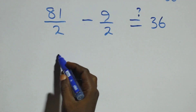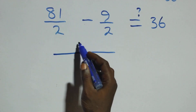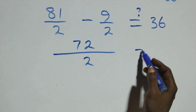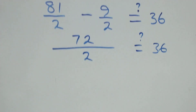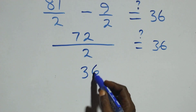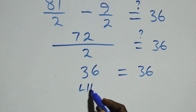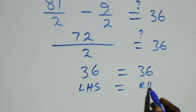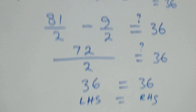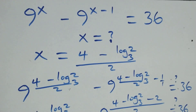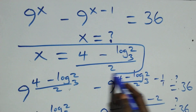Bringing this together as one fraction: (81 minus 9) over 2 equals 72 over 2, which equals 36, equals 36 on the right side. Left hand side equals right hand side, and therefore we conclude that x equals (4 minus log₃2) all over 2 satisfies this given problem.